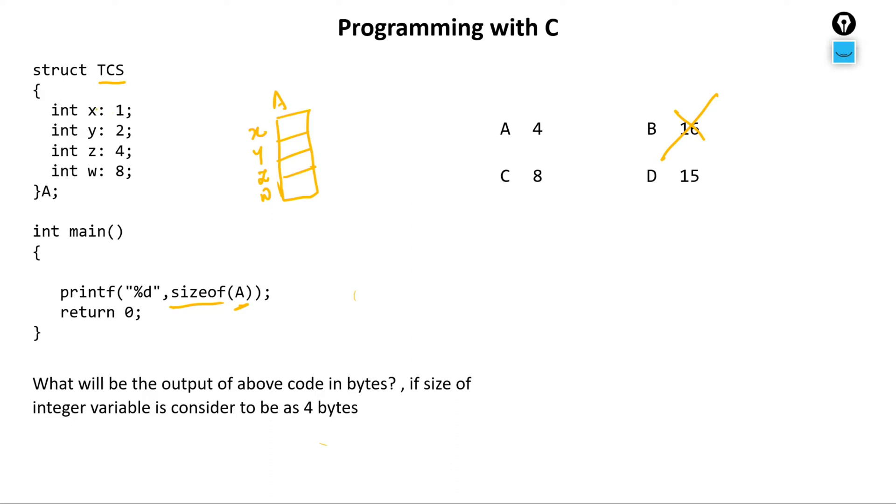This colon represents the bit value. I'm asking the compiler, out of 4 bytes, only give me 1 bit. What is a byte? 1 byte equals 8 bits. An integer takes 4 bytes, so out of 4 bytes I'm asking the compiler to give me only 1 bit. This is 1 bit, this is 2 bit, this is 4 bit, and this is 8 bit.